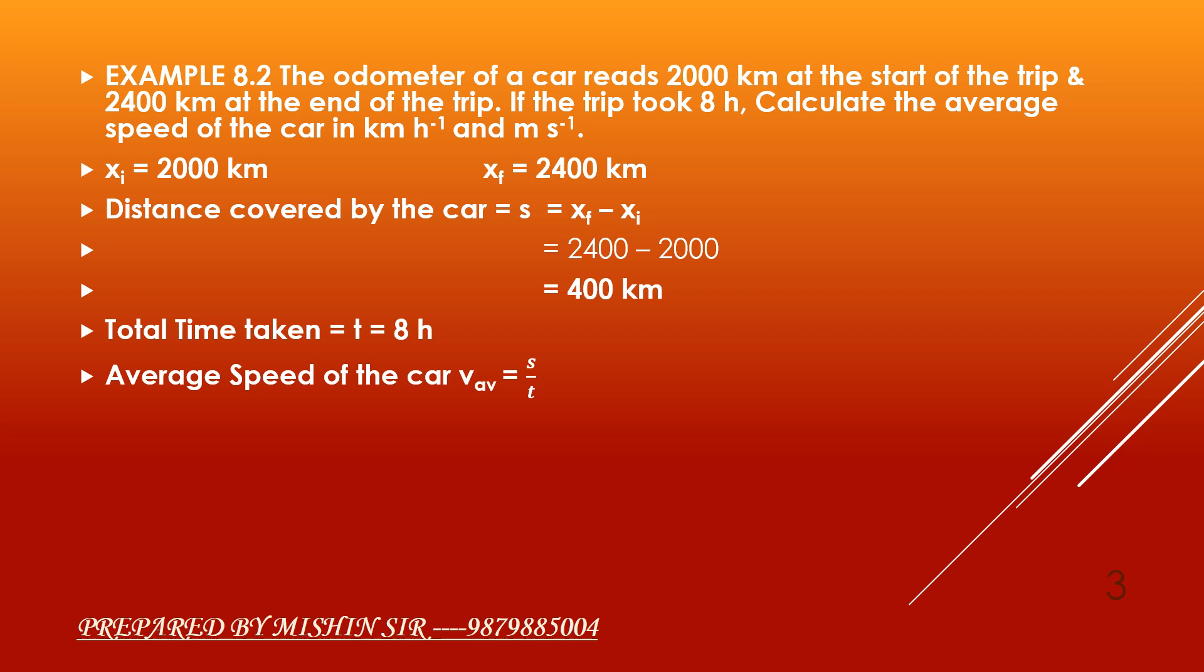Substituting the values, 400 upon 8, we get 50 km per hour. As we need to find average speed in m per second also,